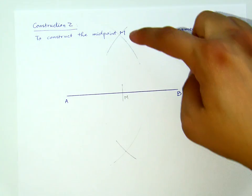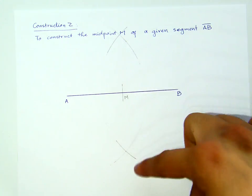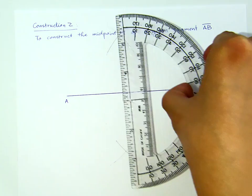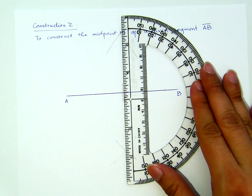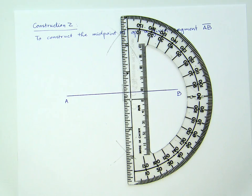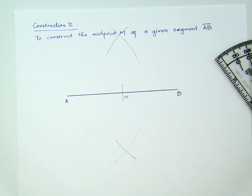Now, the intersection of those two arcs, if you pull the line, the point of intersection of this line and this segment AB will be the desired point M, the midpoint of this segment AB.